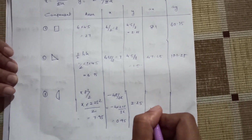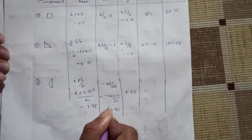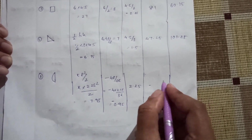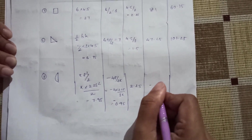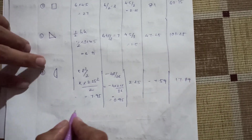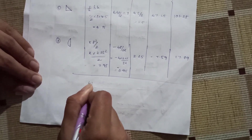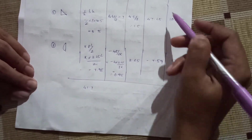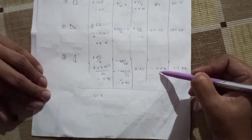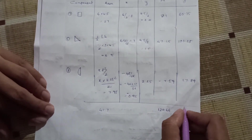The x-value for the semicircle is 1.25, and the area times x gives a negative value of −1.95 since the x is negative. Summation of area is 41.7 mm². Summation of Ax = 81 + 47.25 − 7.59, and this total equals 120.66 mm³.